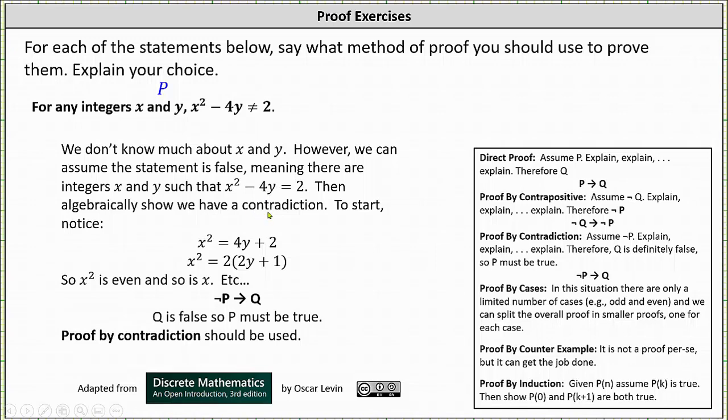The tricky part is determining the contradiction. To start, notice x² = 4y + 2. There's a common factor of 2 on the right, which gives us x² = 2(2y + 1). From here, notice x² is a multiple of 2, which indicates x² is even, and so is x, and so on.